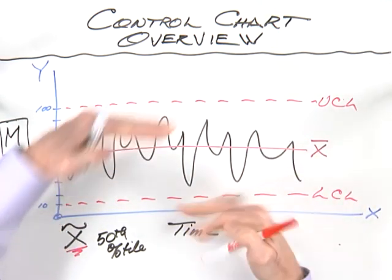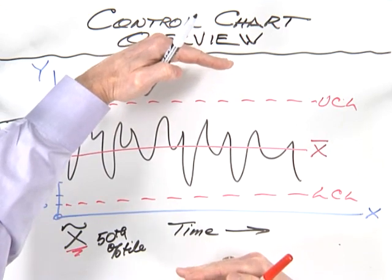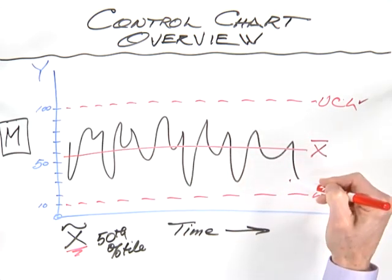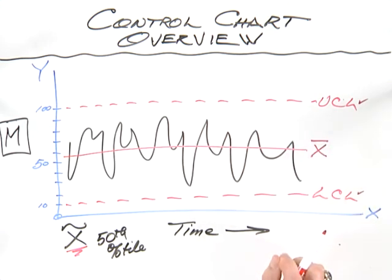The tighter the variation, the tighter the control limits. The wider the variation, the further apart these are. You do not dictate or determine the upper and lower control limits. The variation that lives in the data determines how wide or narrow these lines are.